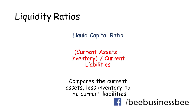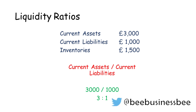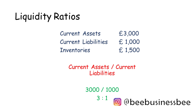Here's an example: current assets of £3,000, current liabilities of £1,000, and inventory or stock of £1,500. To calculate the current ratio, we do current assets divided by current liabilities — £3,000 divided by £1,000 — which gives a ratio of 3 to 1. That means for every £3 in current assets the business has, it has £1 in current liabilities or debts to pay. That is a really strong position.